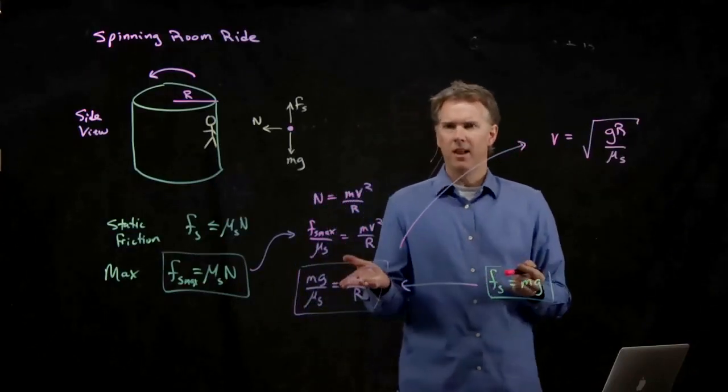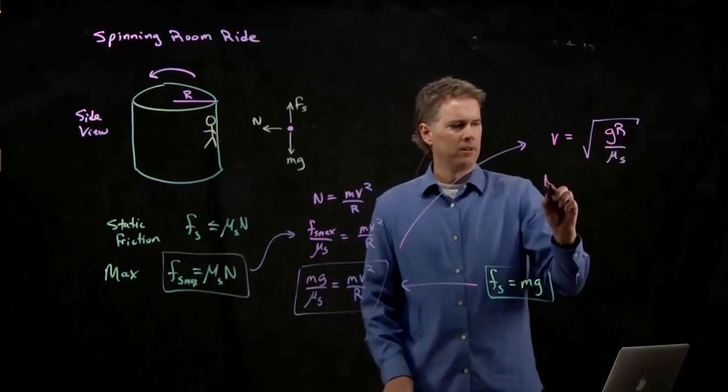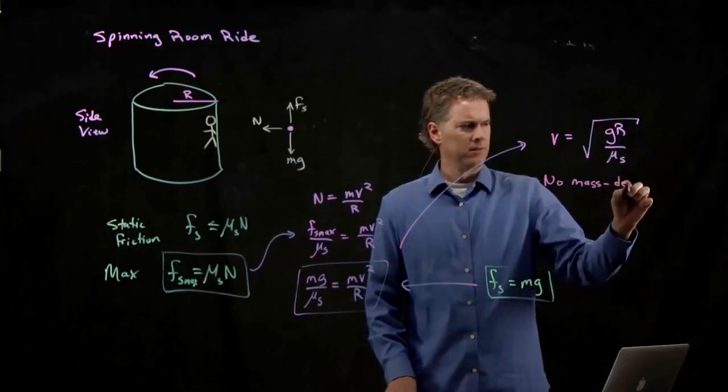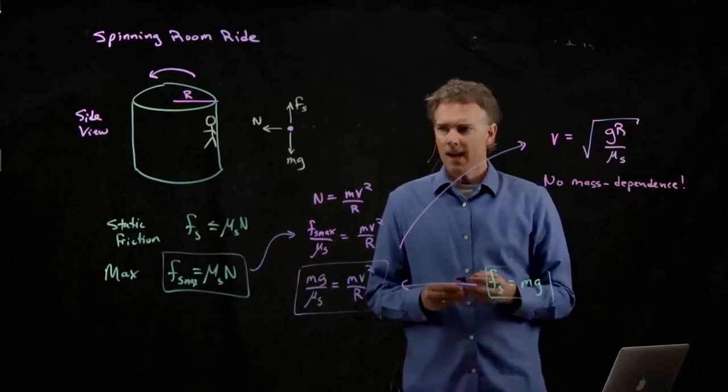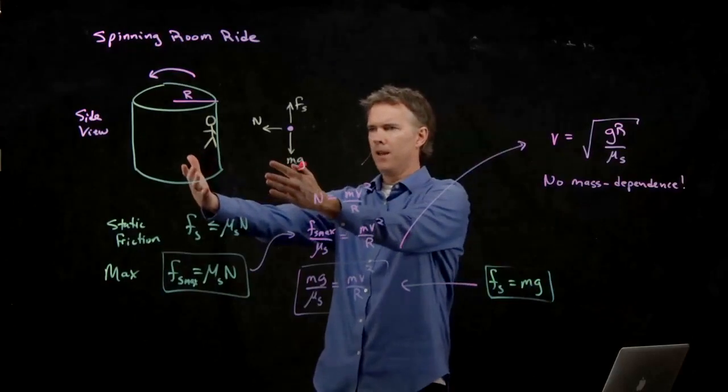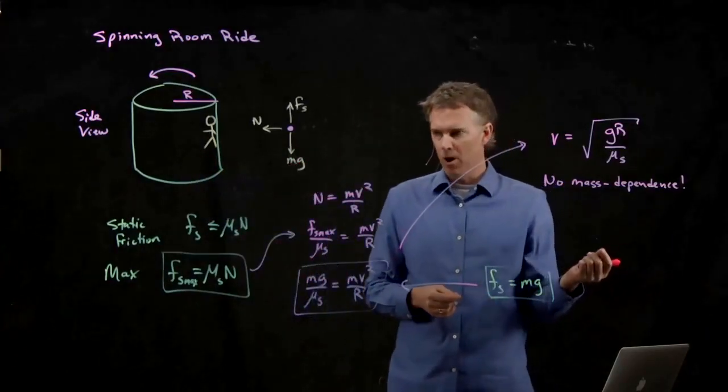So let's take a look at this answer and see if it makes sense. First off, the mass fell out. There's no mass dependence here. Does that make sense? Yeah, it makes sense. Why does it make sense? Because when you have an amusement park ride, you don't want to have to worry about the mass of the rider being able to stick to the wall or not.